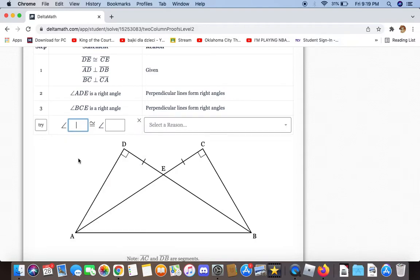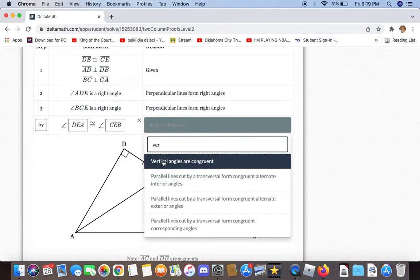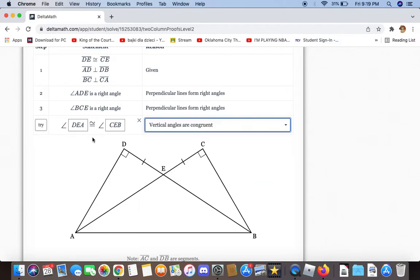We can also say that angles DEA and CEB are congruent because they are vertical angles.